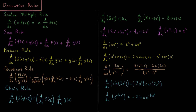Some examples of that: the derivative of 2x squared plus 3x to the 4th — by the scalar multiple rule, the derivative of 2x squared is 4x, and the derivative of 3x to the 4th is 12x cubed. So the derivative of their sum is just the sum of their derivatives: 4x plus 12x cubed.